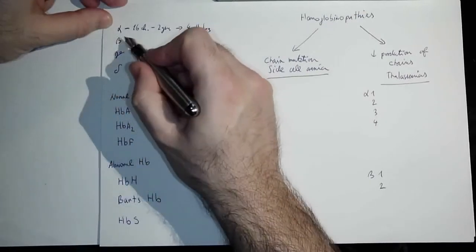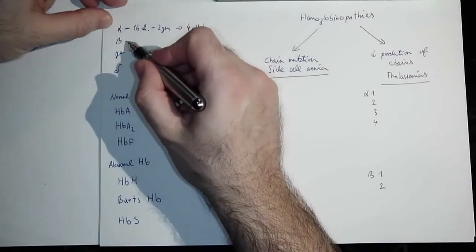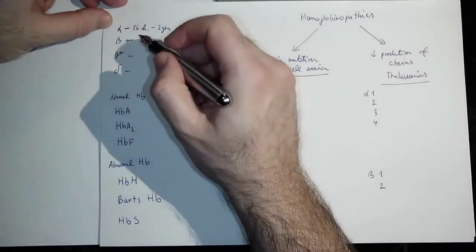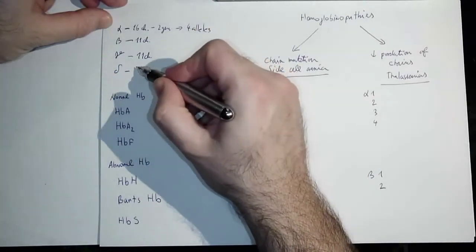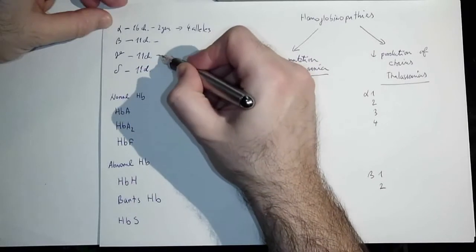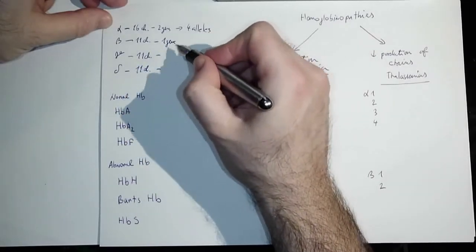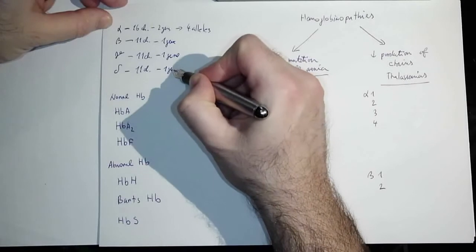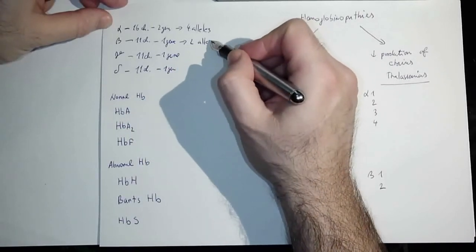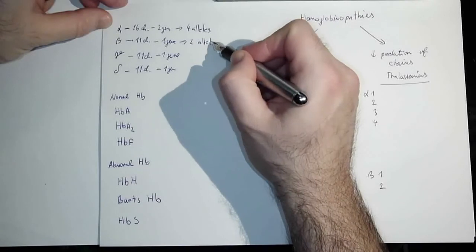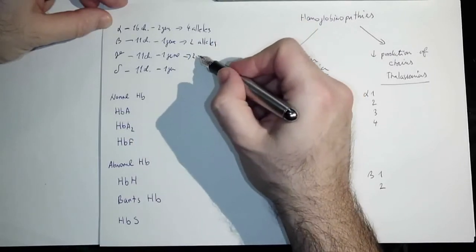In contrast to chain alpha, beta, gamma, and delta are encoded on chromosome 11, and all of them have only one gene, so that's only two alleles.